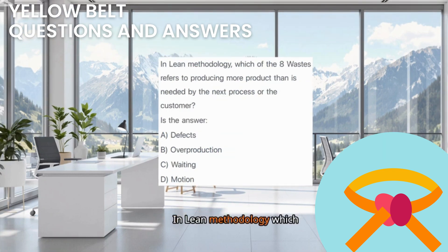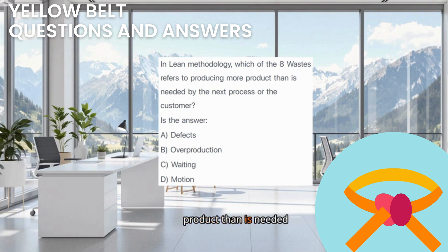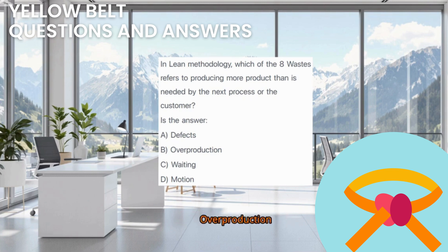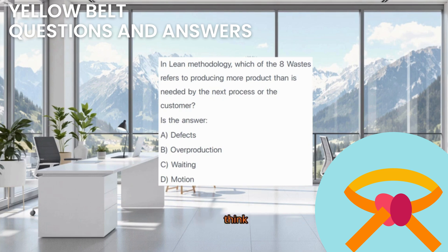In lean methodology, which of the 8 wastes refers to producing more product than is needed by the next process or the customer? Is the answer: A. Defects. B. Overproduction. C. Waiting. D. Motion. Take a moment to think.